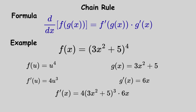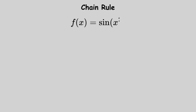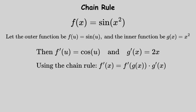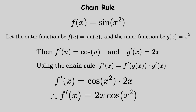Multiplying by the inner's derivative: 4 multiplied by 3x squared plus 5 raised to the power of 3, multiplied by 6x, equals 24x multiplied by 3x squared plus 5 raised to the power of 3. For f of x equals sine of x squared, we get f prime of x equals cosine of x squared multiplied by 2x. This is fundamental for complex nested functions.